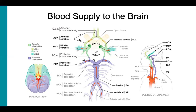The internal carotid arteries are branches of the common carotid arteries. We can see the common carotid arteries here branching into the internal carotid arteries here in green, and the internal carotid arteries coming up at the base of the skull here in the circle of Willis. Then, the internal carotid arteries divide into the anterior cerebral arteries in light green and the middle cerebral arteries in aqua green. The two anterior cerebral arteries are joined together by the anterior communicating artery.